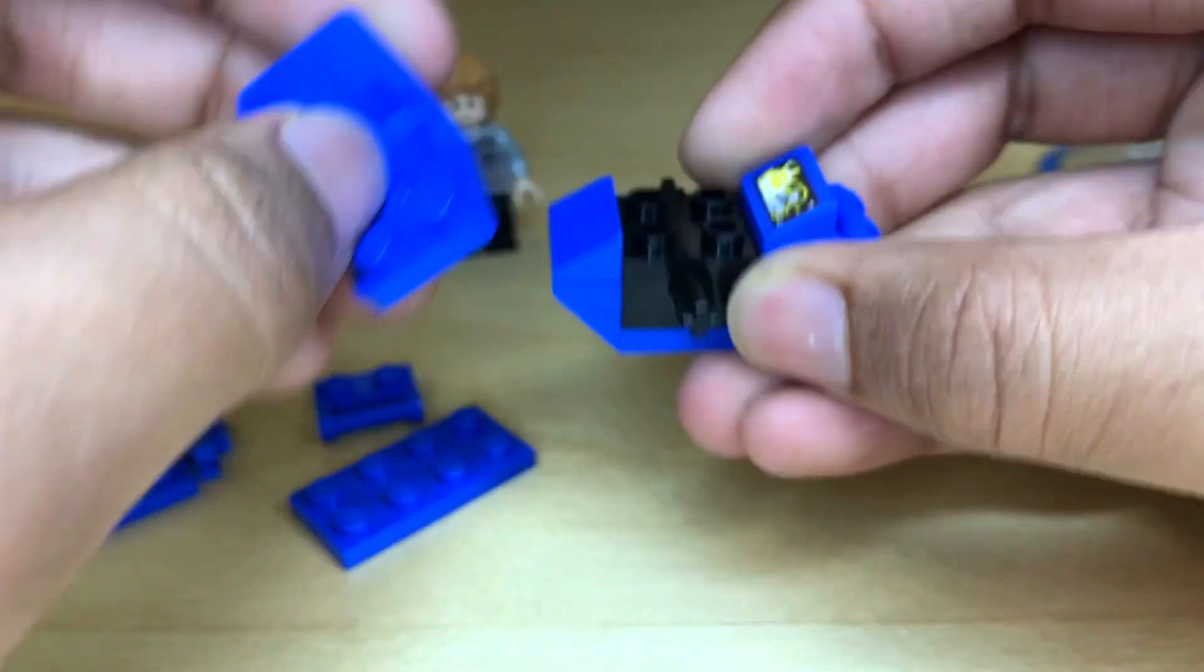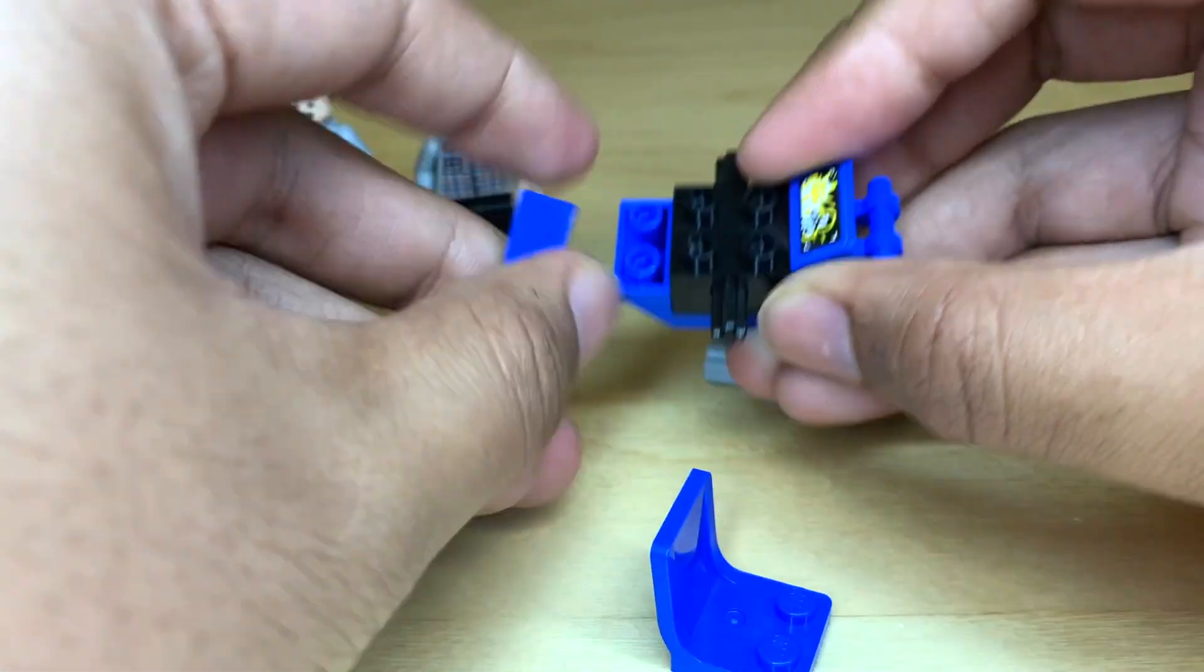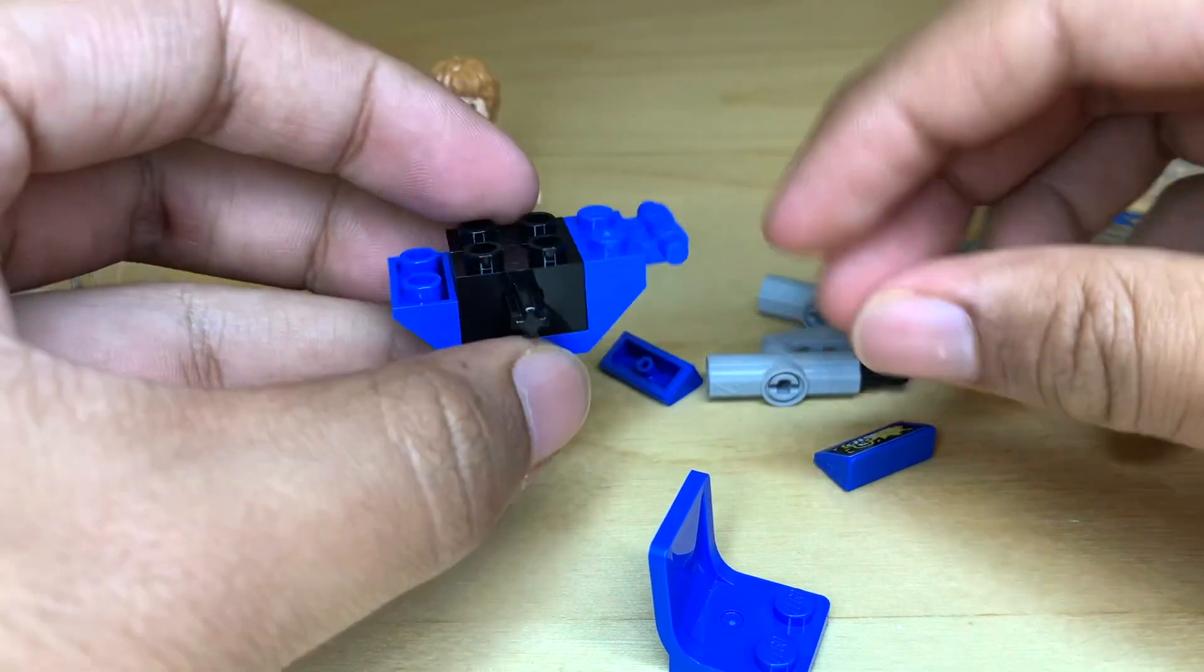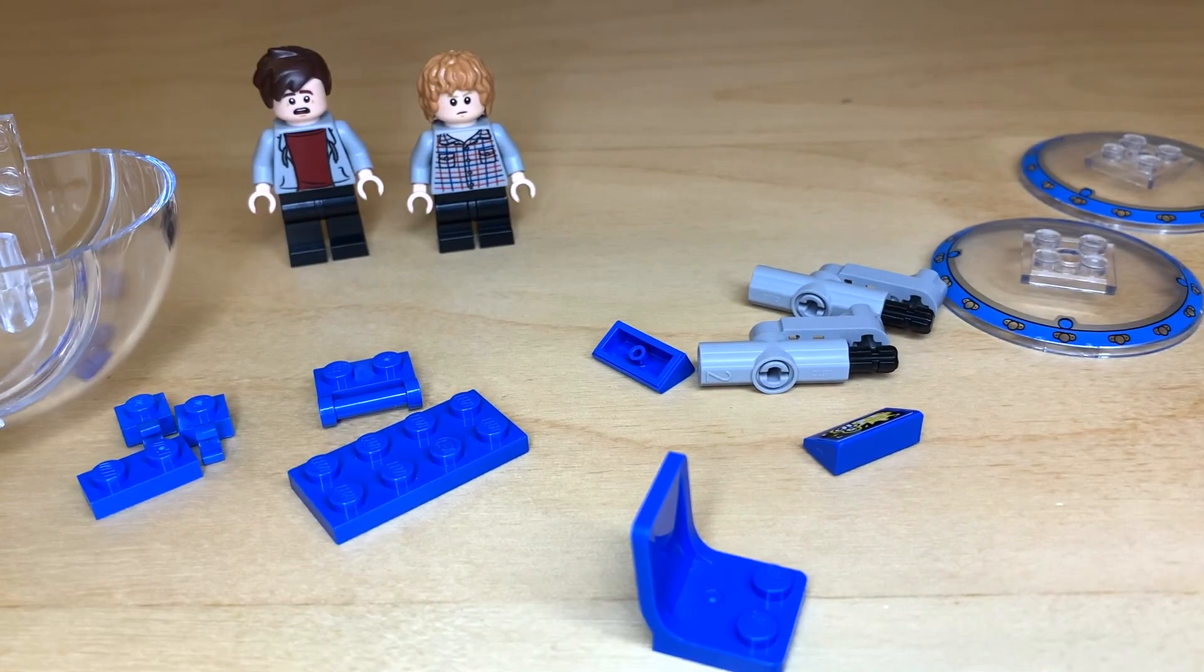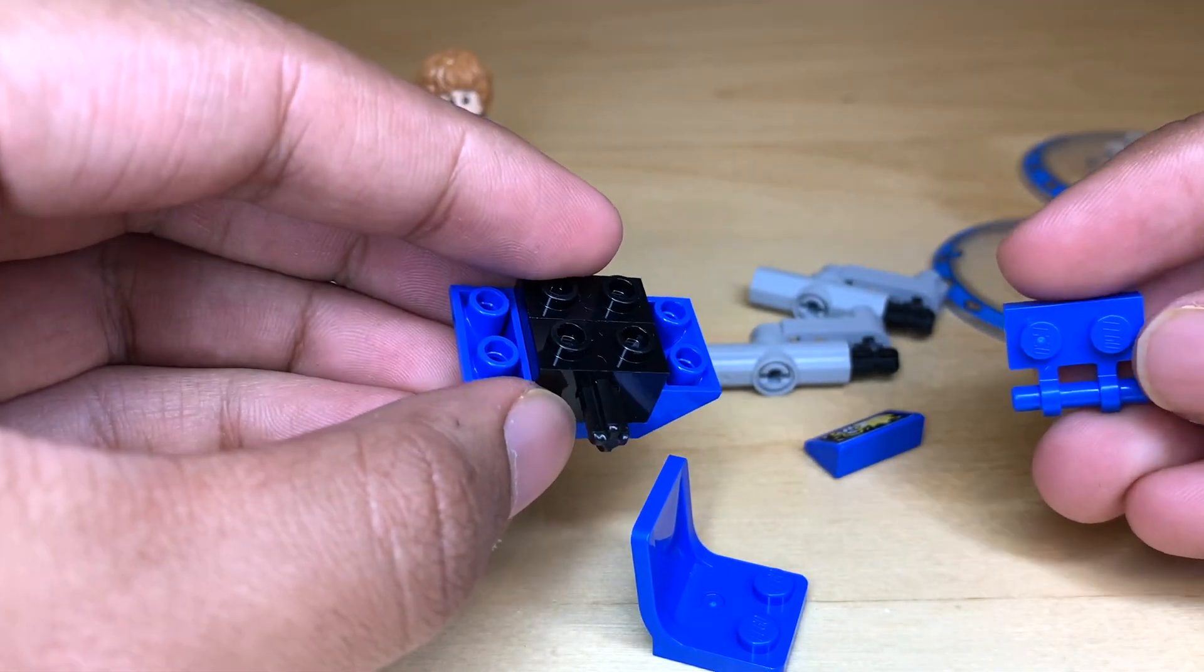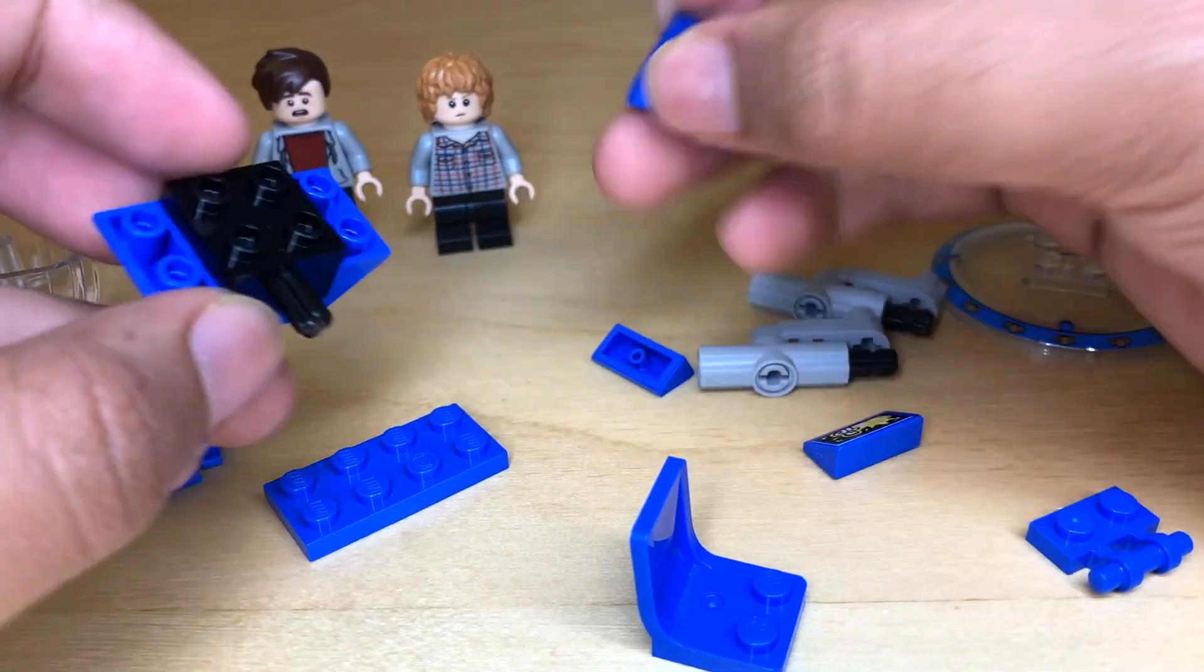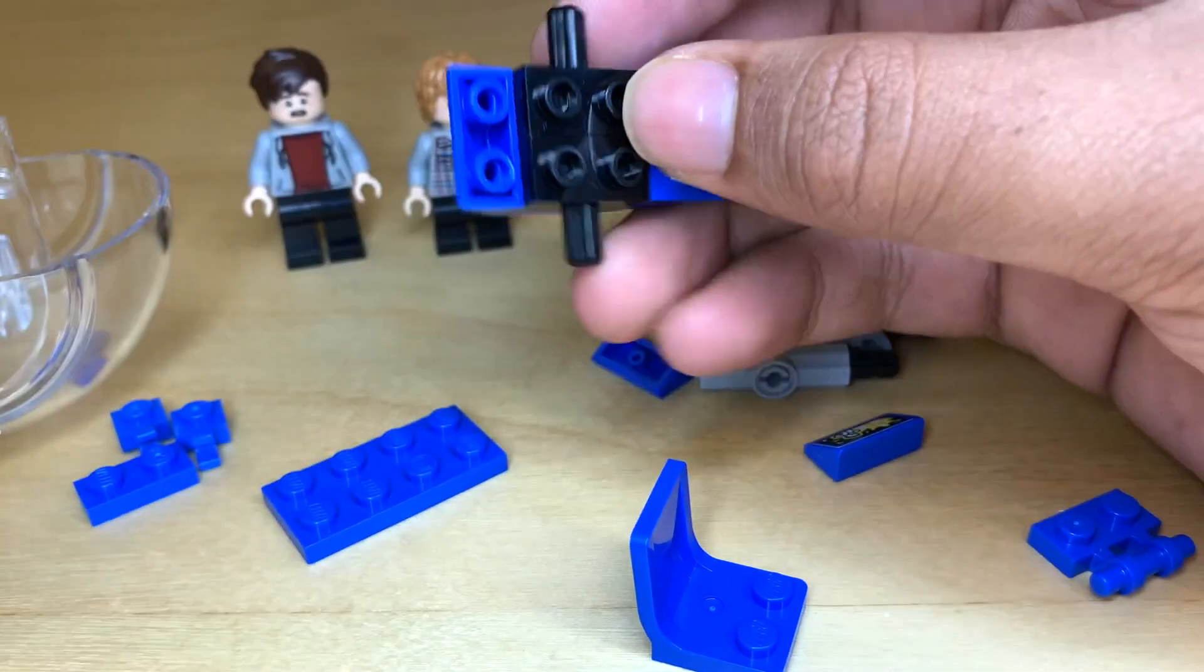So now what you're going to do is just take off the chair and then the two cheese slopes, and then you're also going to want to get rid of this 1x2 plate, which I just dropped. But you're going to need to replace this one with the one with the bar because that one is not going to allow you to attach the screen.